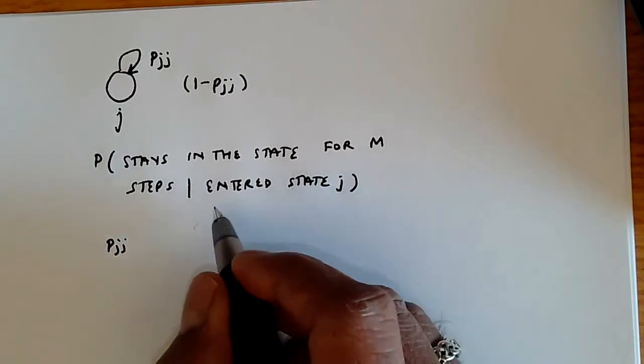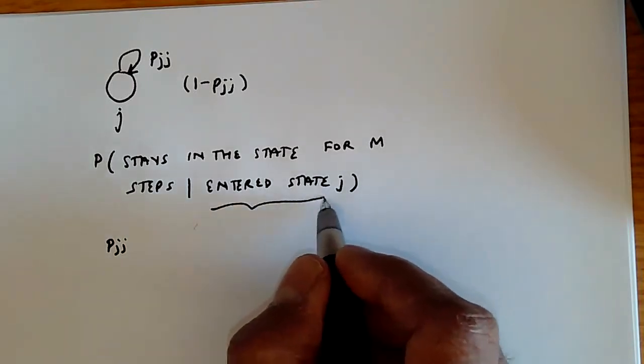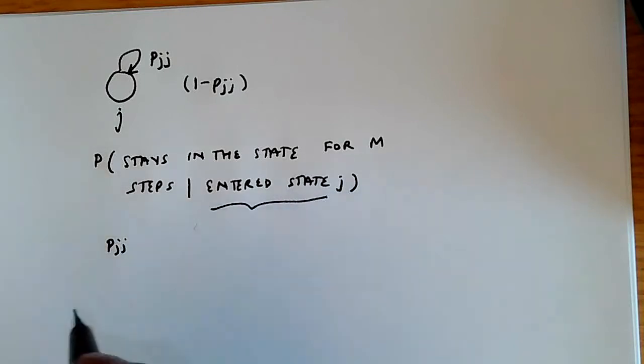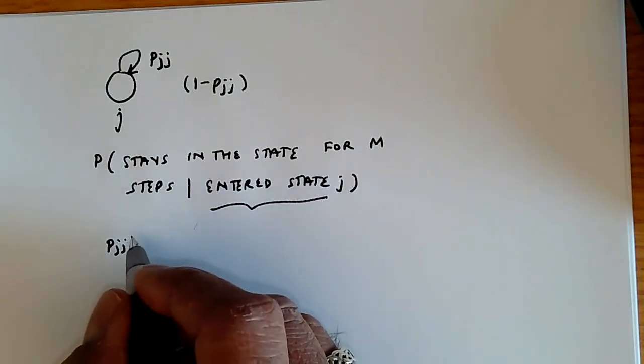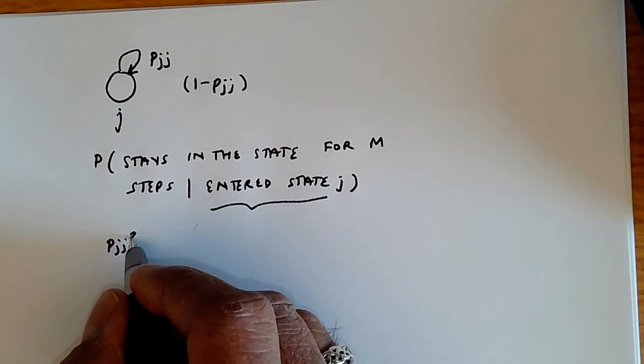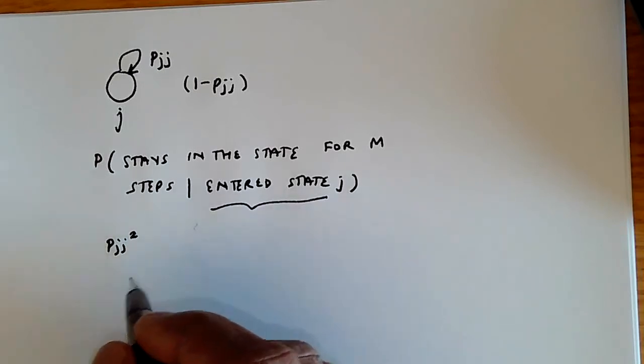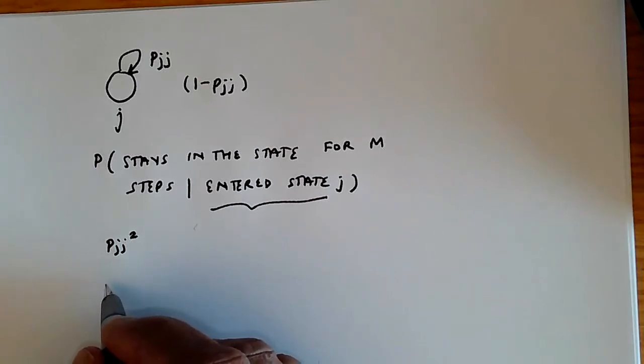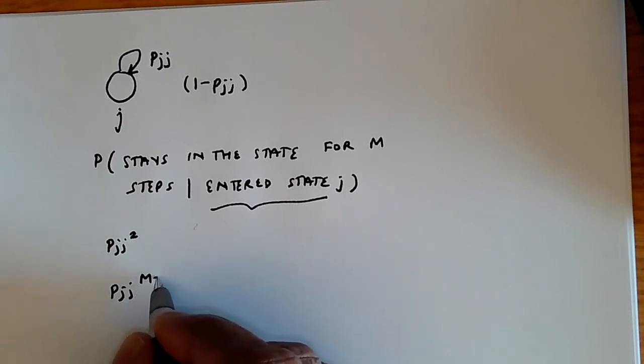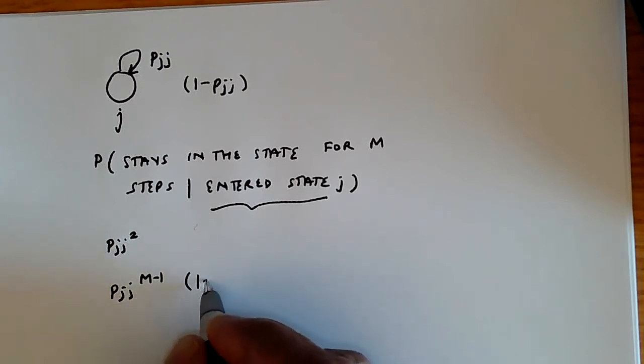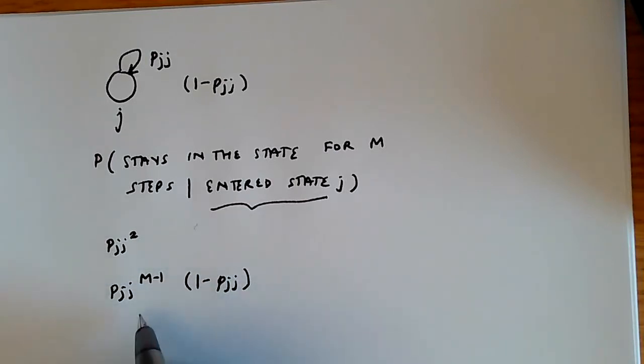So, the conditionality in entering state j goes away. And so, the probability it stays two steps is going to be pjj squared, and so on. If you want to compute the probability of being there for m steps, it's going to be pjj raised to the power m minus 1 times 1 minus pjj, because it must be there for m steps and then leave at the end of it.